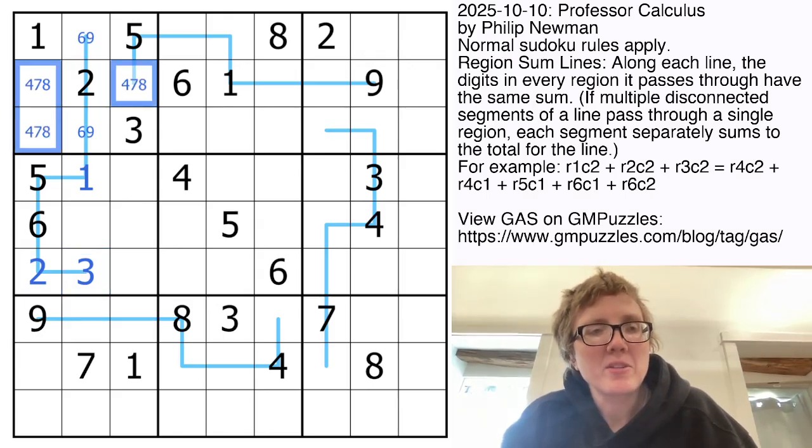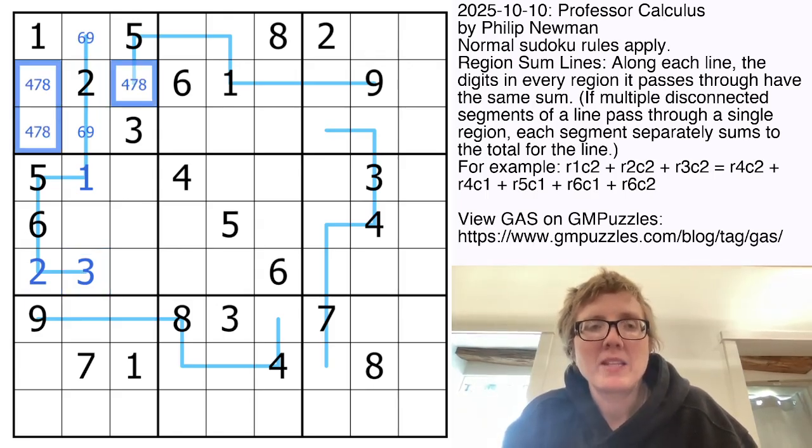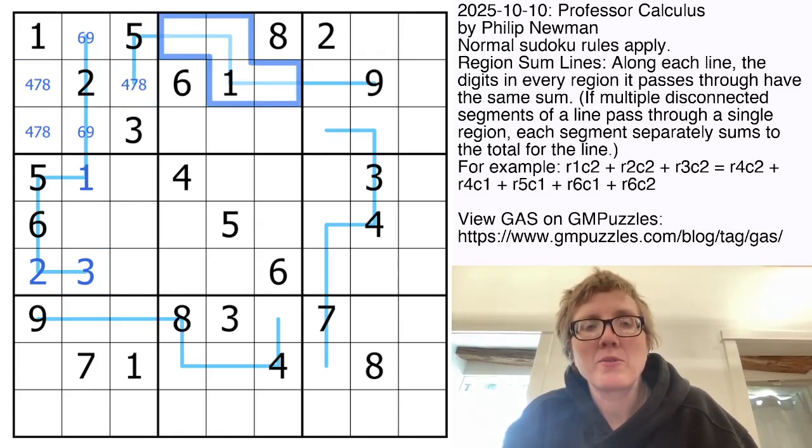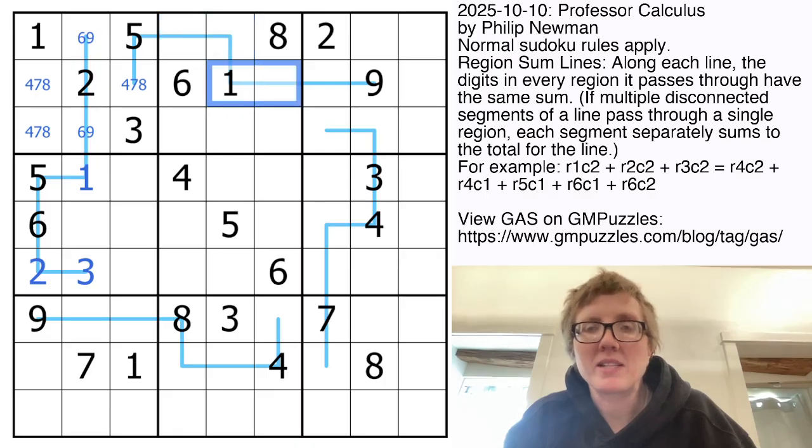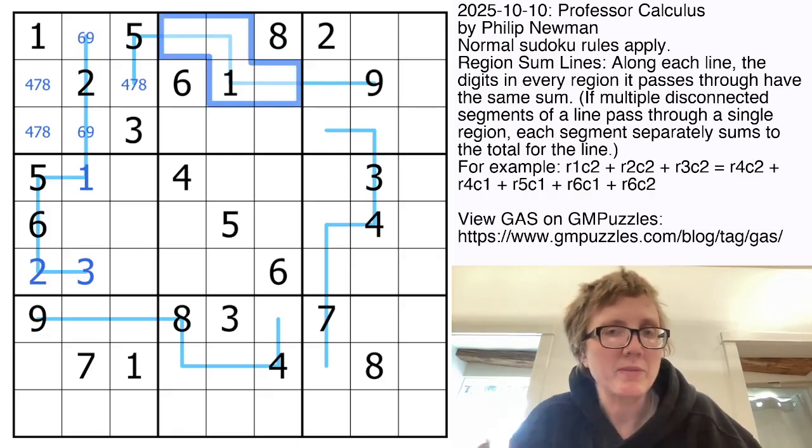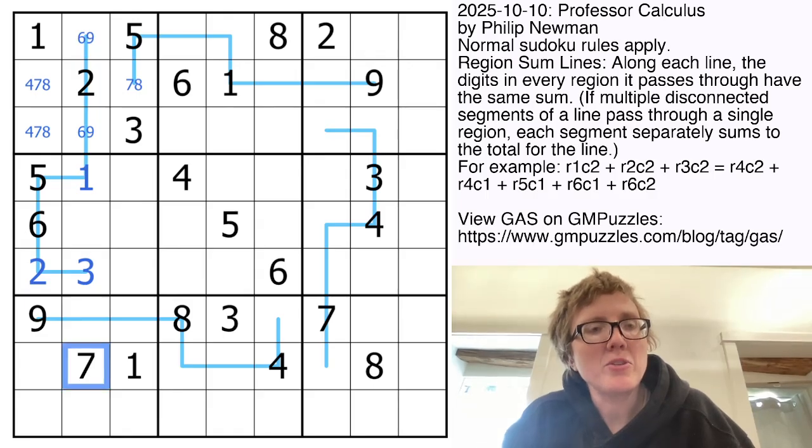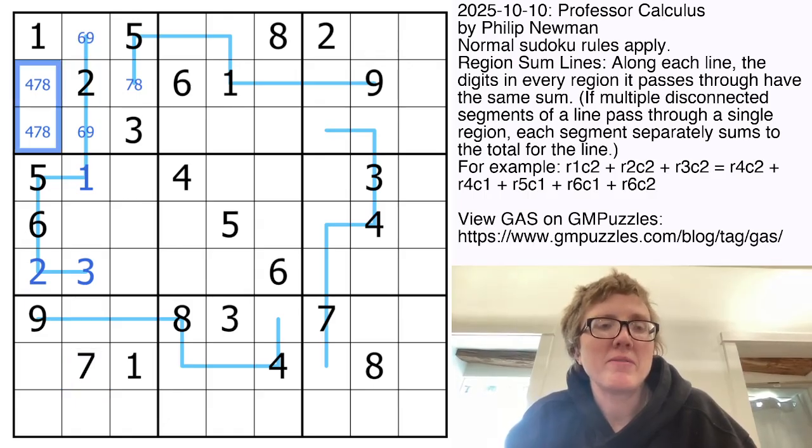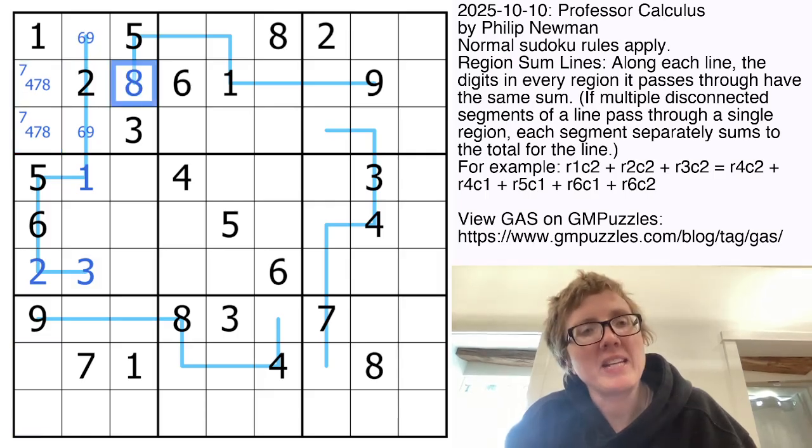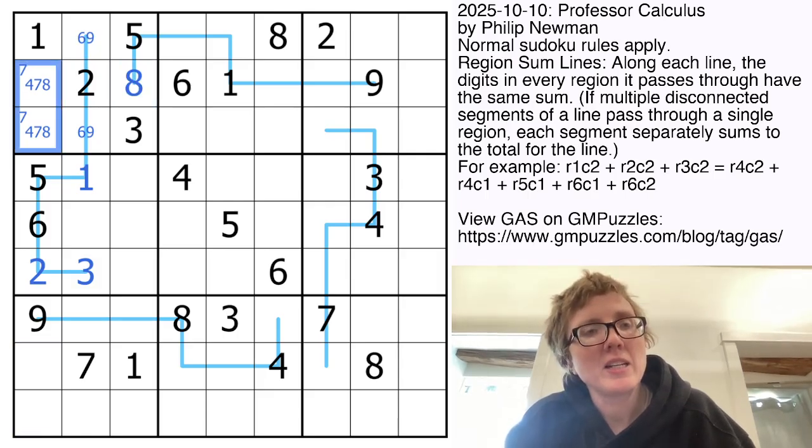Now these guys are going to be 4, 7, and 8 to finish off region 1. Now because this consists of 4 digits that are summed together, their sum has to be at least 10. The minimum is 1, 2, 3, 4 equals 10, so this can't be a 4. And in addition, because there's a 7 here in column 2, the only place for 7 in column 1 is going to be in one of these two cells. We can't put it here or here, so this can't be a 7. That must be an 8.